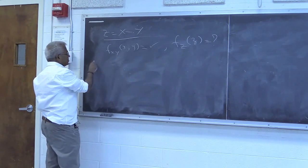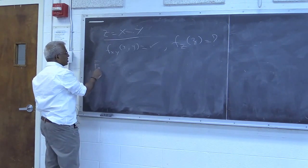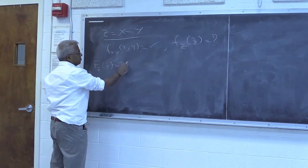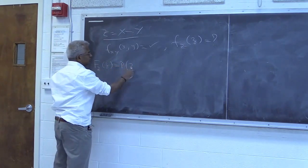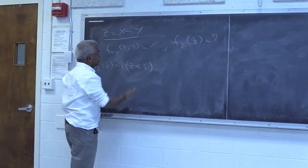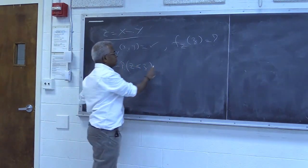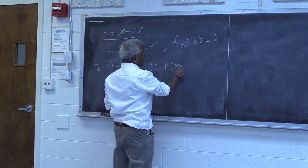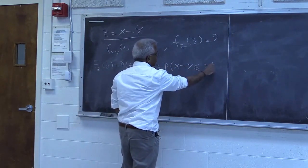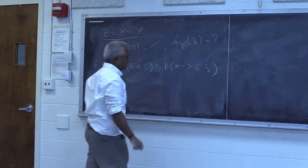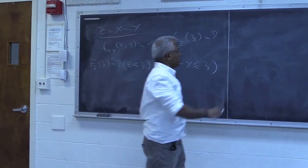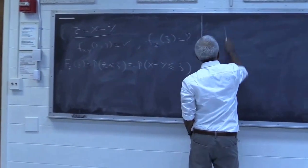It is easiest to start with the distribution function of z. By definition, this is the probability that z is less than or equal to z, which means x minus y is less than or equal to z. So we need to see where that region is.